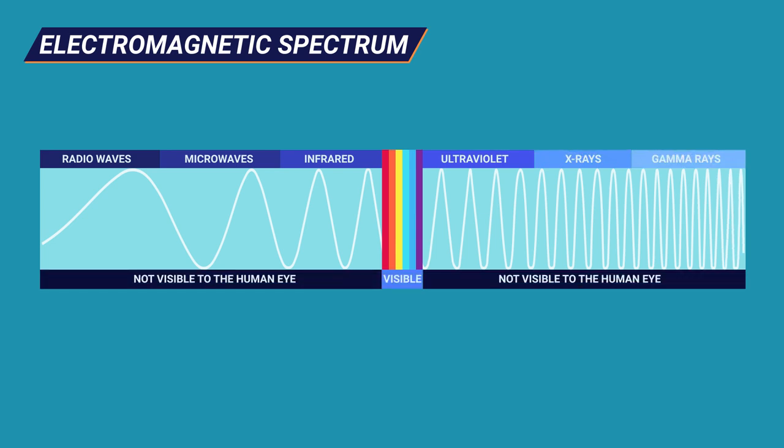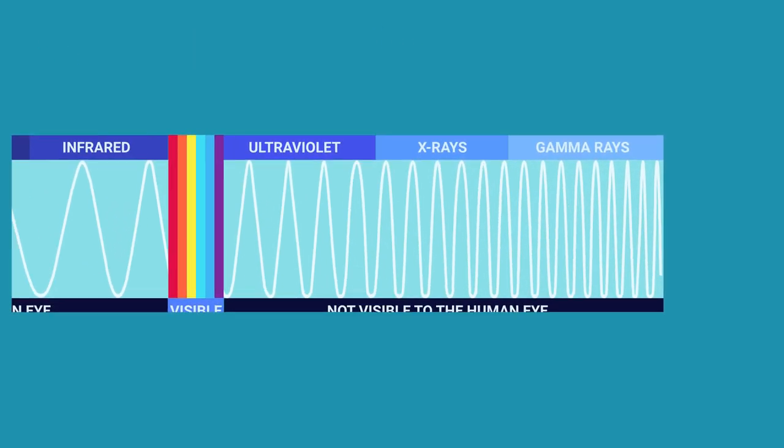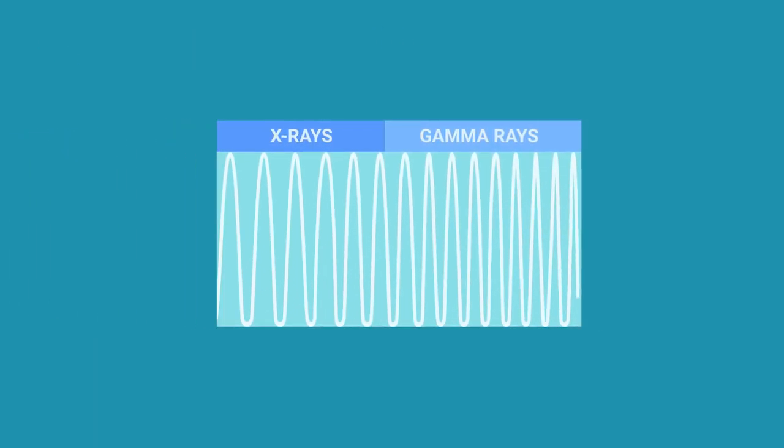To be able to examine the inner workings of an object in detail, we need to look at the part of the spectrum with the shortest wavelengths. It's here where we can find X-rays and gamma rays.